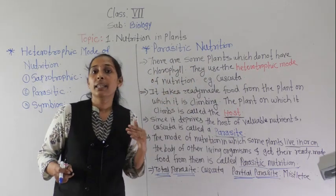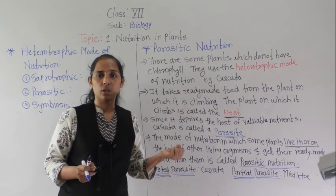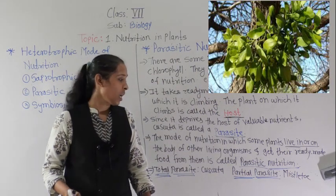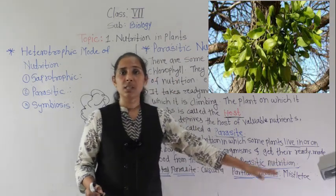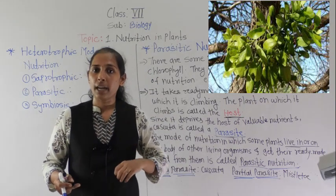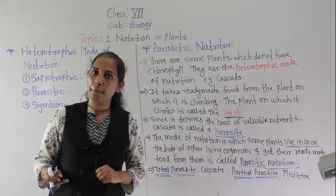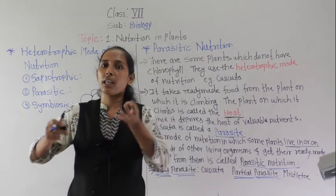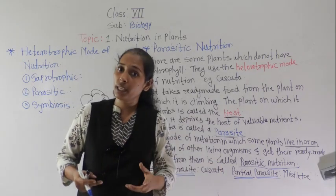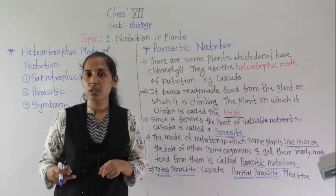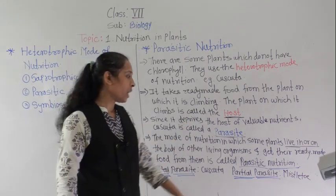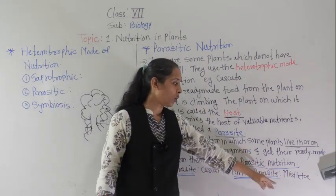Another type is the partial parasite. Partial means they only partially depend on others for food. The example is mistletoe. Mistletoe is green in color — it can make its own food, but to do so, the water and minerals it absorbs are sucked from another plant. So they can do photosynthesis, but they absorb water and minerals from other plants. That is the reason they are called partial parasites, and the example is mistletoe.